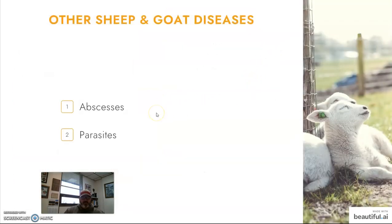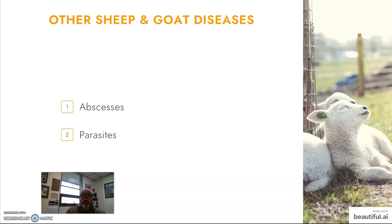Abscesses can set in whenever animals are injured. They can be difficult to detect in sheep with long wool. Parasites are also something you have to be aware of — even though sheep and goats are ruminants, they have that split upper lip that allows them to get closer to the ground, making them very susceptible to gastrointestinal parasites. You want to be active in your deworming strategy in order to prevent those.